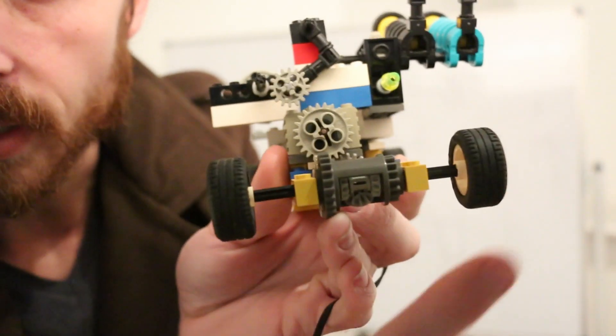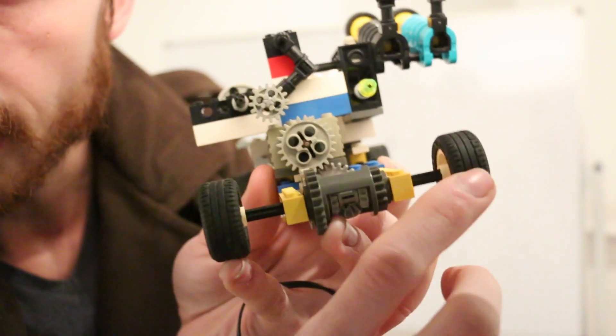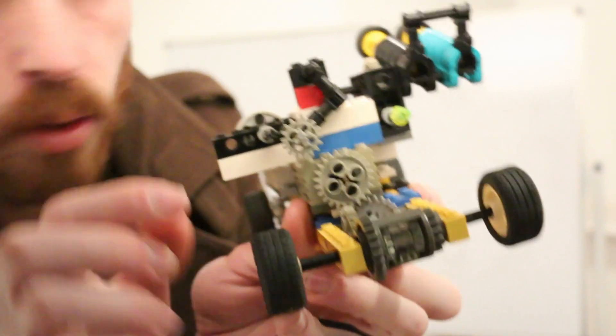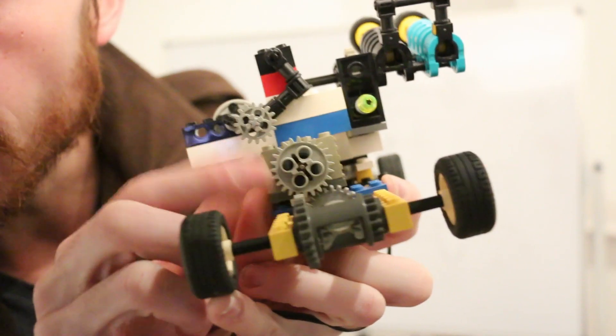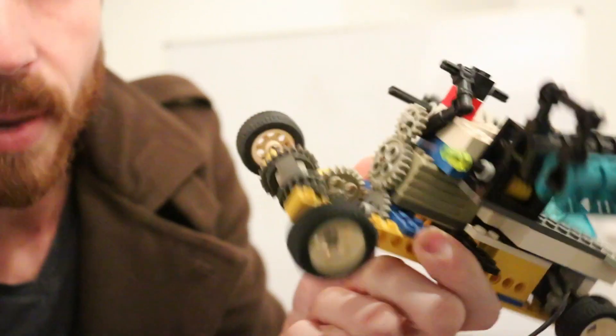The problem with the open differential is if we lose traction on one wheel, that wheel will just spin up. So if I hold traction on this wheel and spin the motor, that wheel is just spinning up, so I'm not getting any power to the ground.